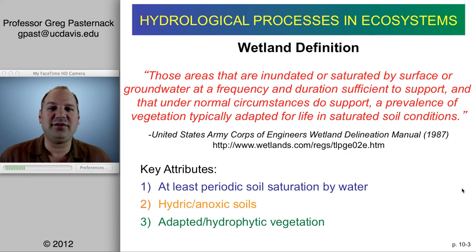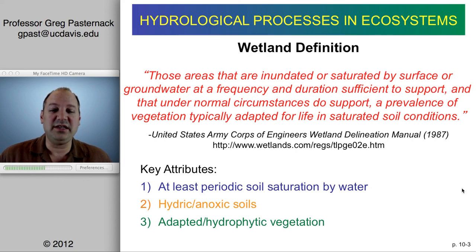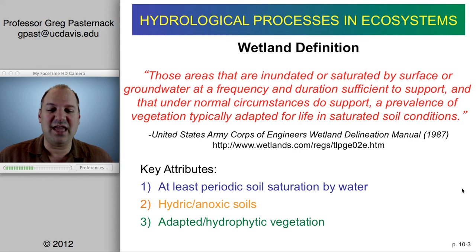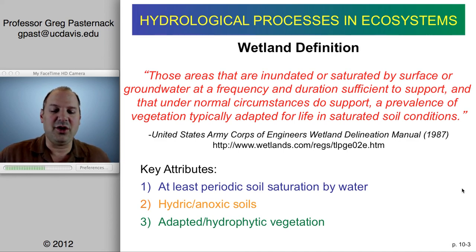How periodic? Periodic enough so that the soils themselves have changed to fall into this hydric or anoxic classification — flooded enough to change the soils. That's the answer for how periodic. And then number three: flooded enough that the vegetation present there is adapted to being flooded — what we call hydrophytic, meaning liking water.